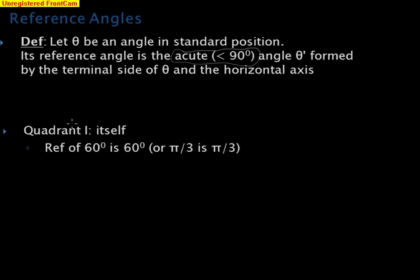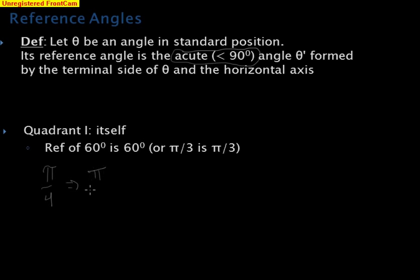There are rules for each quadrant for a reference angle. The easiest one is quadrant 1 — the rule is itself. So if I gave a reference angle for the 60 degree angle, it's just 60 degrees. Or if we're in radians, pi over 3, then pi over 3 is the reference angle. What's the reference angle for pi over 4? The reference angle is going to be pi over 4. So no work really involved for quadrant 1.